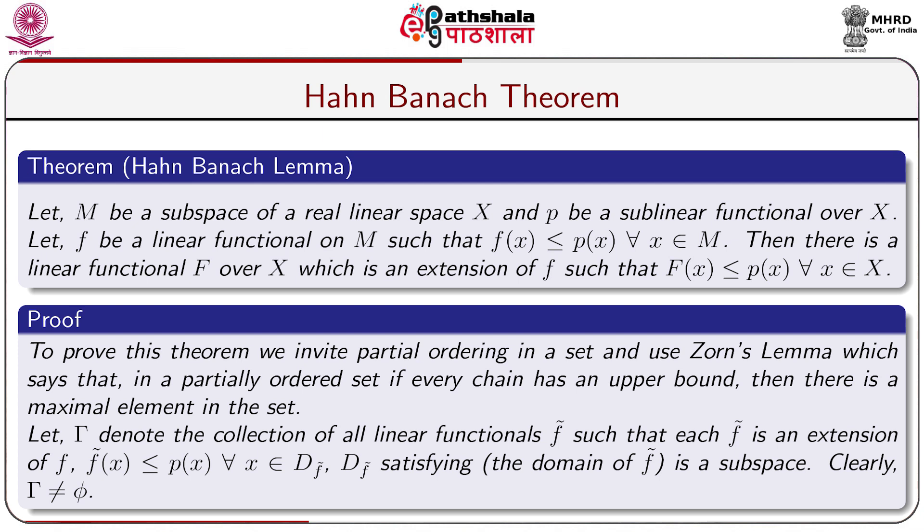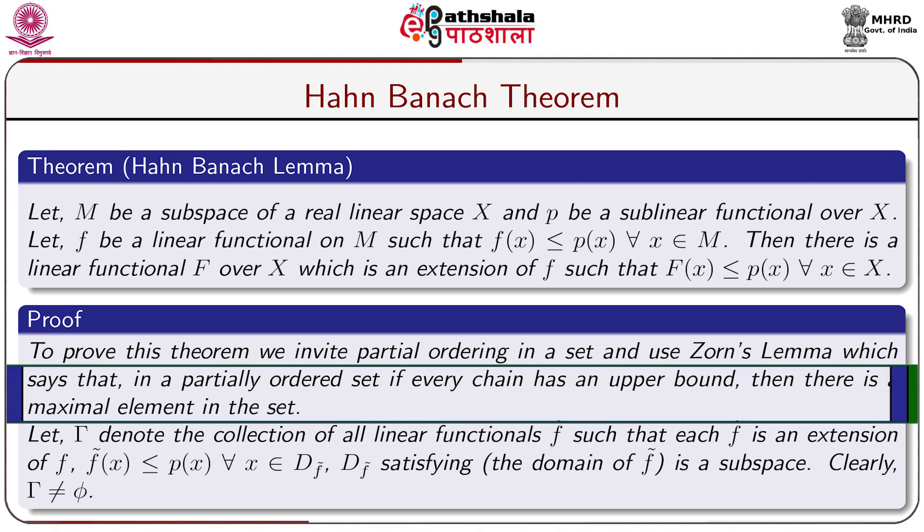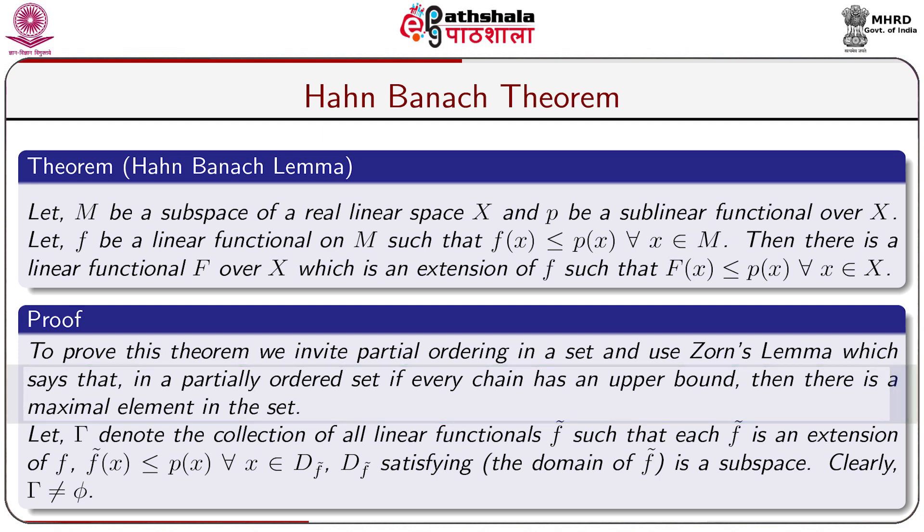To prove this, we invoke partial ordering in a set and use Zorn's lemma, which says that in a partially ordered set, if every chain has an upper bound, then there is a maximal element in the set. This is a set-theoretic property.